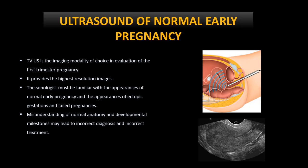Endovaginal ultrasound is the imaging modality of choice in evaluation of the first trimester pregnancy. It provides the highest resolution images for better evaluation of pregnancy. The sonologist performing the examination must be familiar with the appearances of normal early pregnancy, ectopic gestations, and failed pregnancies. Misunderstanding of normal anatomy and developmental milestones may lead to incorrect diagnosis and treatment.